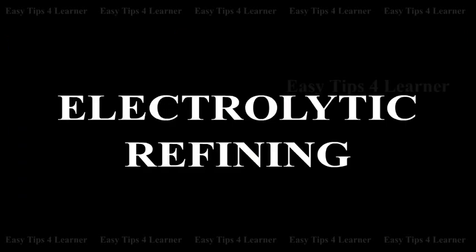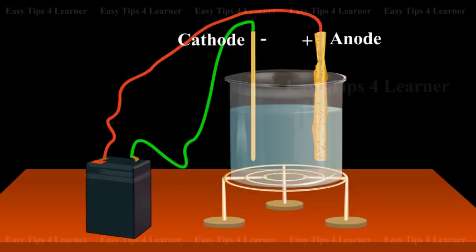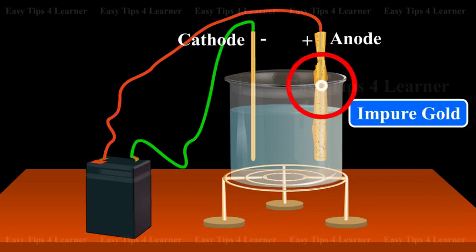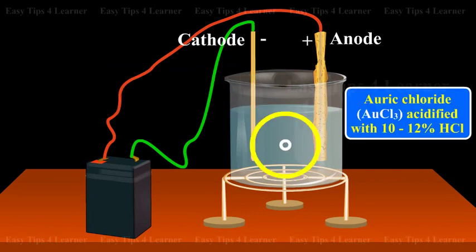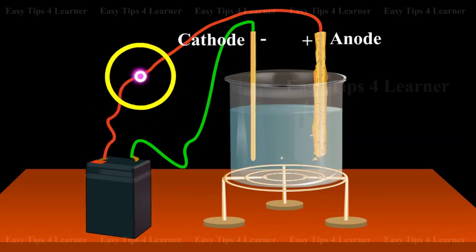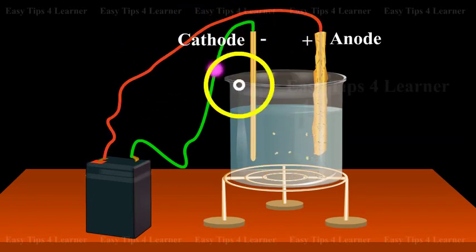Electrolytic refining: this method is used when very pure gold is required. The impure gold is made the anode, while a thin sheet of pure gold acts as the cathode. The electrolyte consists of a solution of auric chloride (AuCl₃) acidified with 10–12% HCl. On passing current, pure gold gets deposited on the cathode.